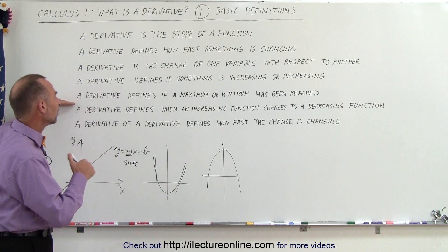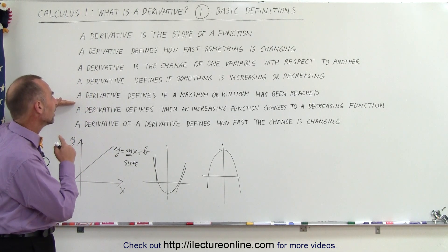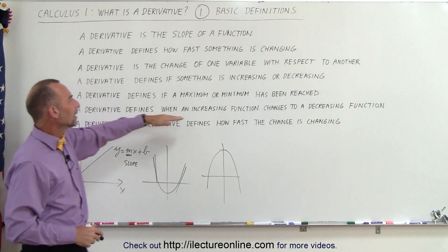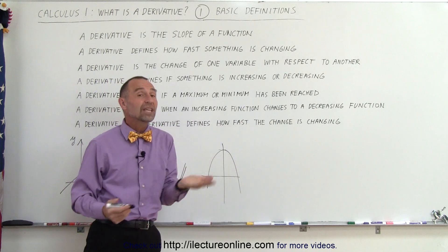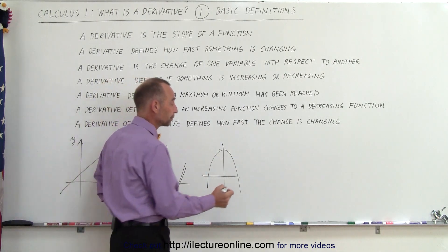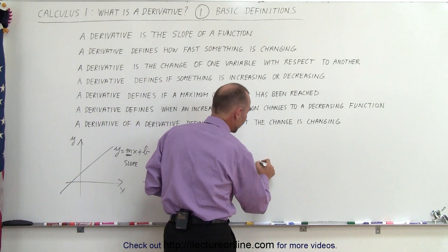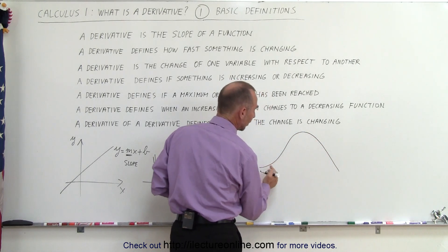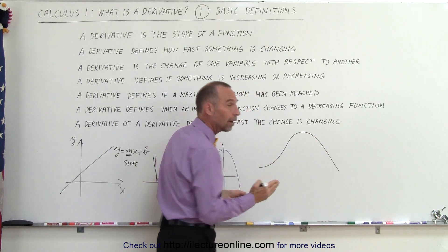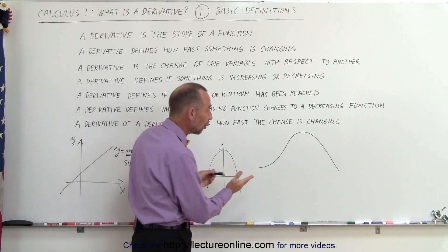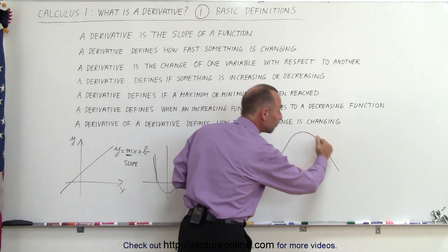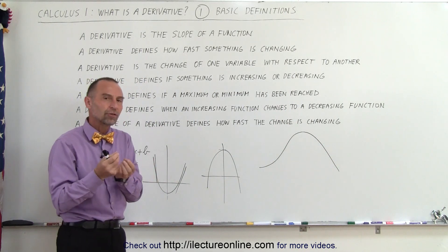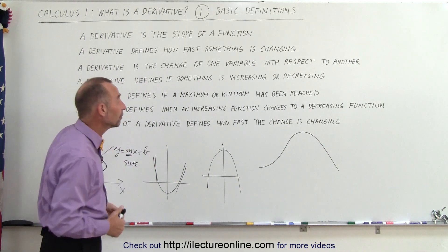Another way a derivative can be used is it defines when an increasing function changes to a decreasing function. For example, here we can say that the function is increasing, and here we can say that the function is decreasing. So a derivative helps us figure out when a function is increasing and when a function is decreasing, due to the derivative defining the slope of the function.